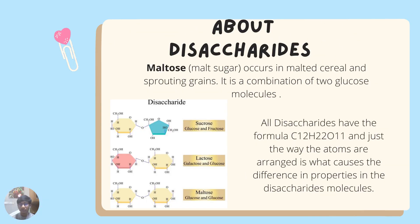Maltose, also known as malt sugar, occurs in malted cereals and sprouting grains and is found through the incomplete digestion of starch. It is a combination of two glucose molecules. All disaccharides have the formula C₁₂H₂₂O₁₁, and the difference in the arrangement of atoms is what causes the difference in properties among disaccharide molecules.